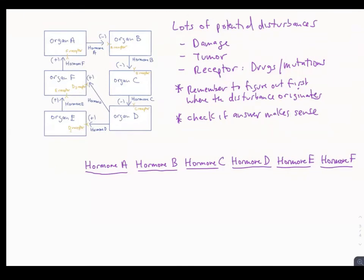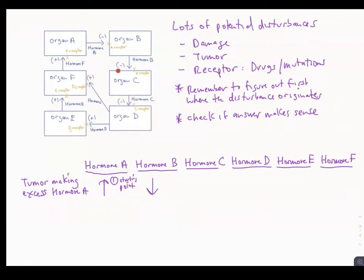For example, a tumor making excess hormone A — the disturbance starts with hormone A being high. Working through the loop: hormone A goes up, hormone B goes down (negative sign), hormone B goes down so hormone C goes up (negative sign), hormone C goes up so hormone D goes down, and hormone D going down means hormone E goes down (positive sign), so hormone F goes down. This makes sense because hormone F stimulates A, and we'd want that to go down in a negative feedback system.